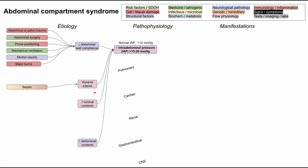Next, visceral edema. Sepsis can cause swelling of the internal organs. Massive volume resuscitation — giving large amounts of IV fluids — is another cause. For example, major burns create significant insensible losses and severe dehydration, requiring large volumes of IV fluid, which can then cause visceral edema. Post-operative or intraoperative fluid administration can similarly lead to visceral edema, as can treatment of hypovolemic shock, where massive resuscitation may result in abdominal compartment syndrome.